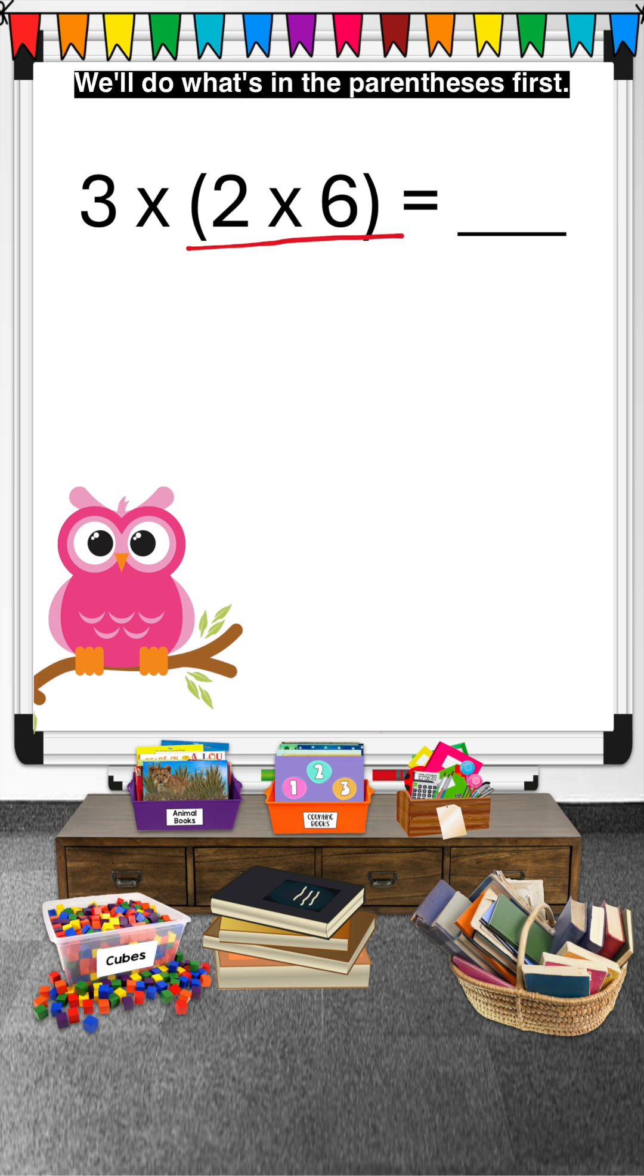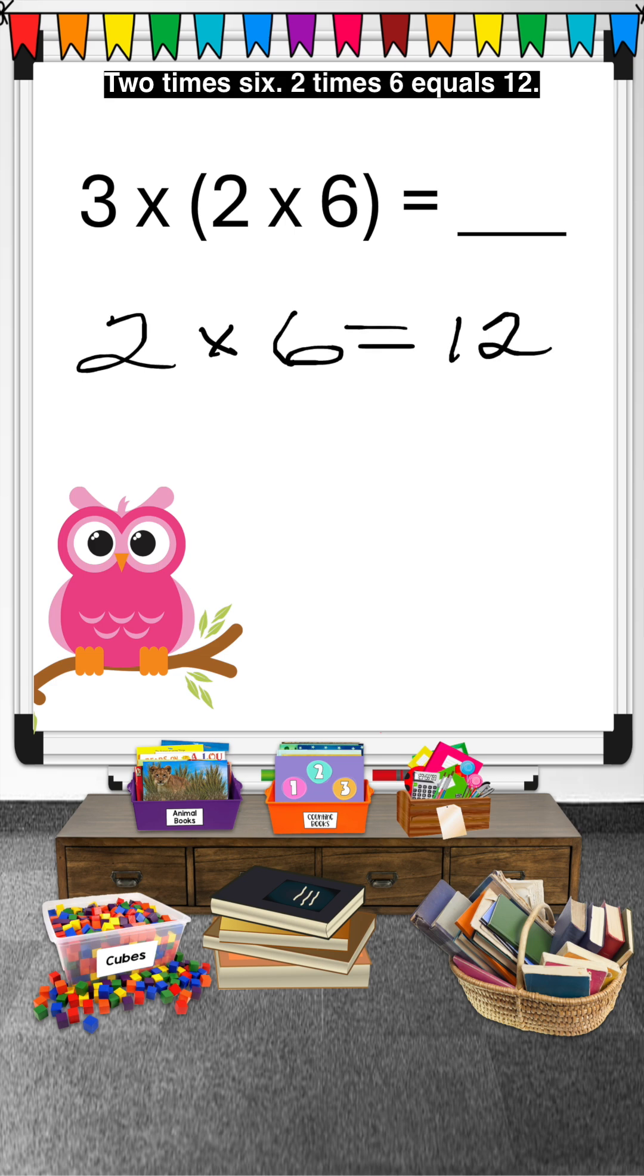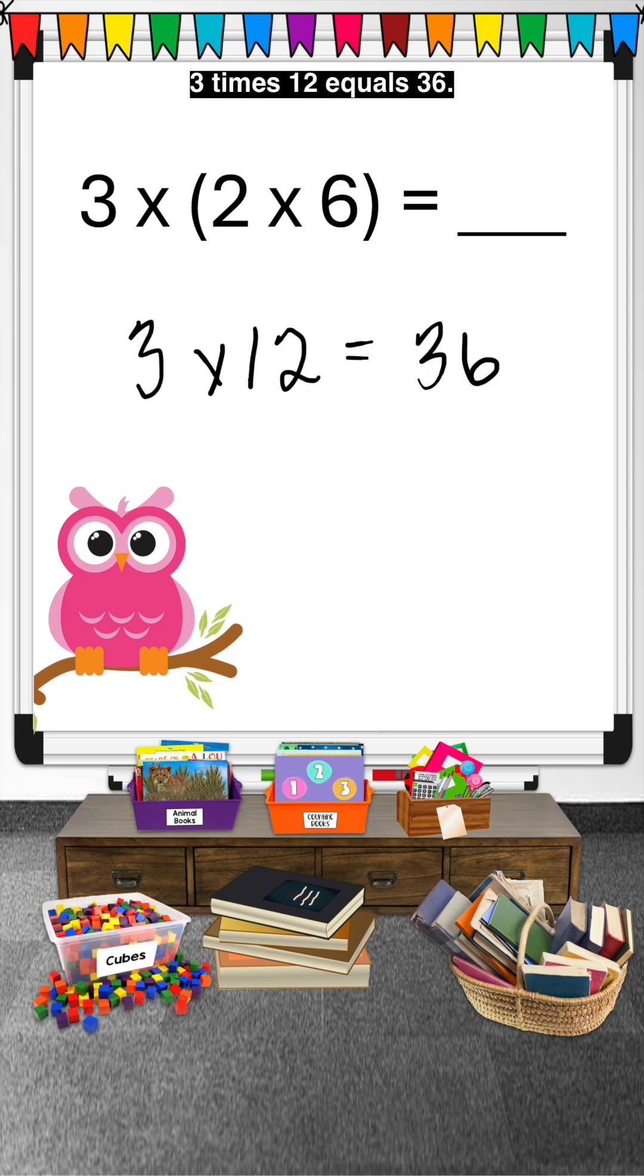We'll do what's in the parentheses first. 2 times 6. 2 times 6 equals 12. Now we continue by multiplying the 12 by 3. 3 times 12 equals 36.